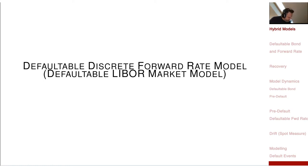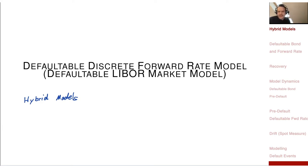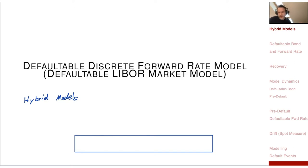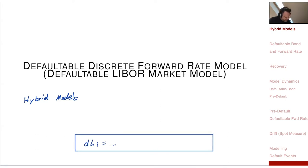If you think of hybrid models, the first question is: what is the quantity that is creating your numeraire? We will stay on the same numeraire — we will use our discrete forward rate model, the one without the default, to model the numeraire.